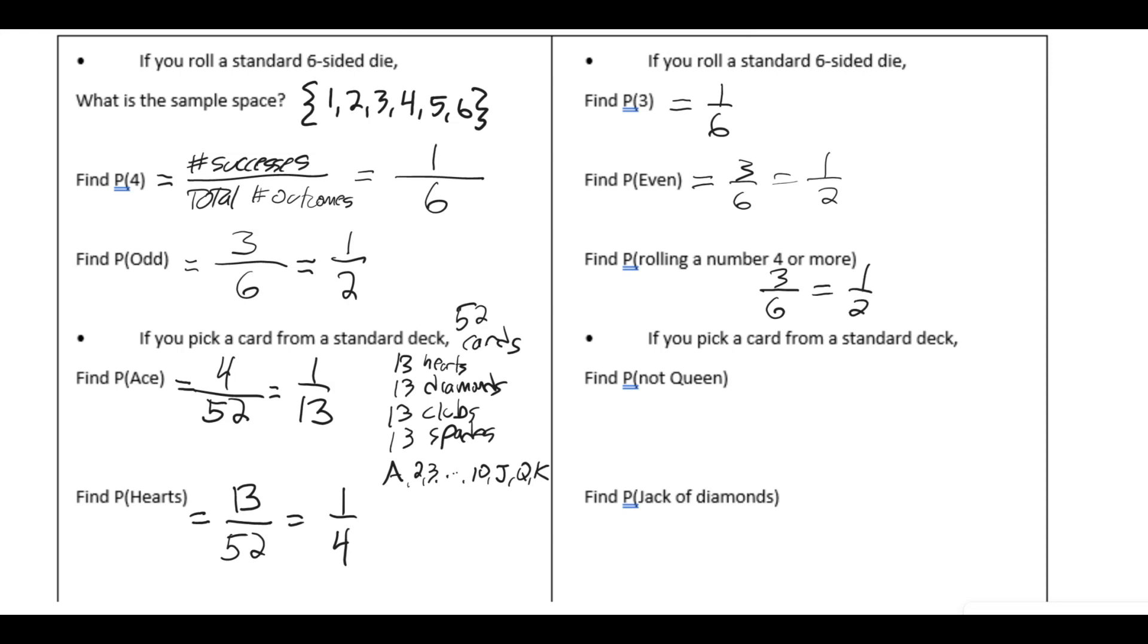For the standard deck, the probability of not a queen is 48 out of 52, which reduces to 12 out of 13. And the probability of a jack of diamonds, there's only one of those out of 52.